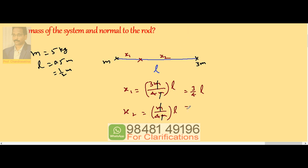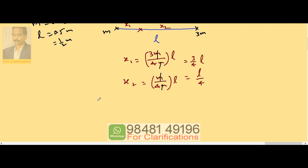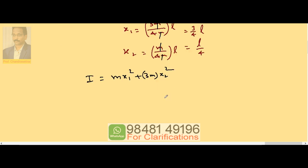Now moment of inertia of this system, I, is given by M into X1 square plus 3M into X2 square. So substitute X1 value: M into 3/4 L whole square plus 3M into L/4 whole square.